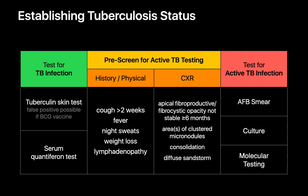Tests for TB infection are the tuberculin skin test and serum QuantiFERON blood test. Tests for active TB infection are AFB smears, culture, or molecular testing. The pre-screening test for active TB infection is composed of the patient's history and physical and their chest x-ray. If a patient's history and physical and chest x-ray are both negative, it's very unlikely an active TB infection test will be positive, so active TB infection testing is usually withheld and the patient is labeled as having a latent TB infection. If either the history and physical or chest x-ray is concerning, however, then active TB infection testing is indicated.